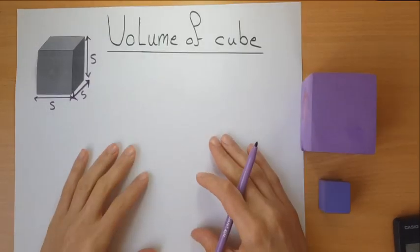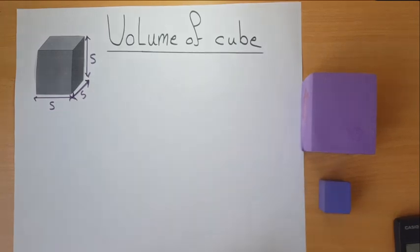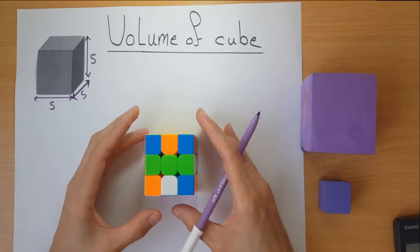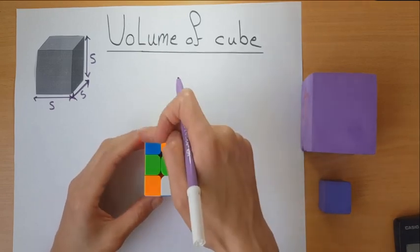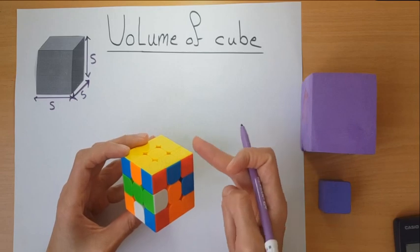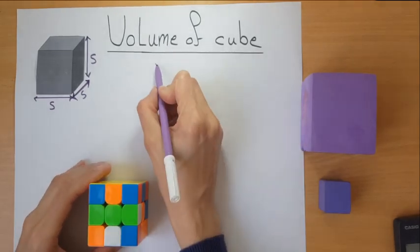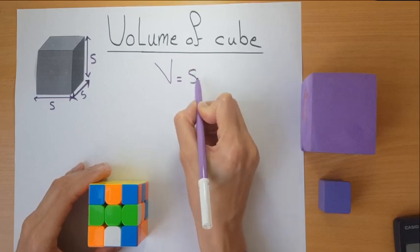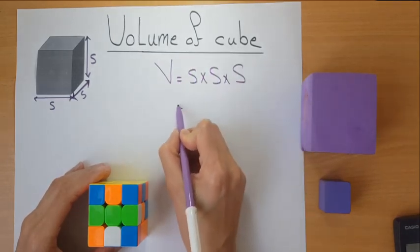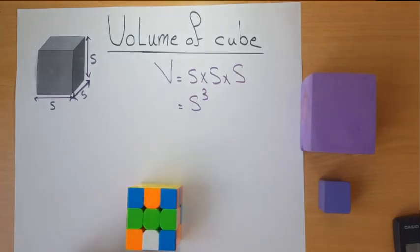In this video we'll speak about the volume of some regular shapes. Let's start with a cube. A cube is a 3D shape that has equal sides — this side is equal to this side and equal to this side. The volume of the cube is side times side times side, or we could say side cubed.